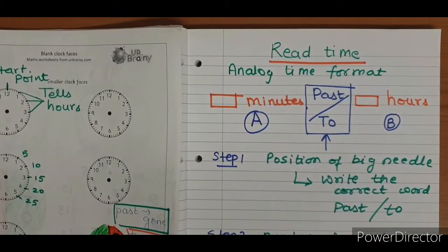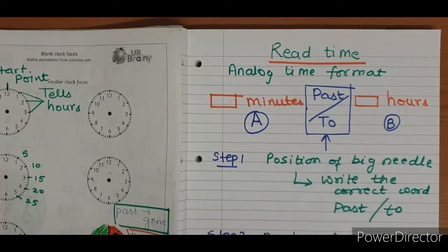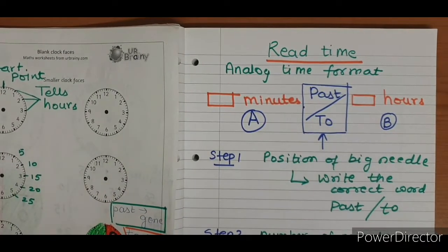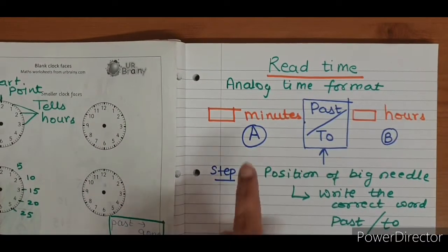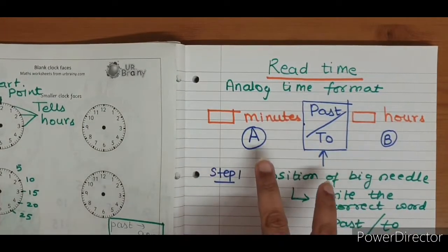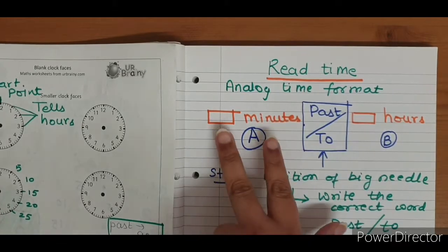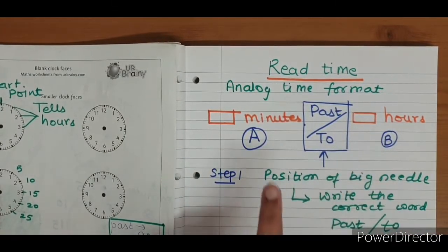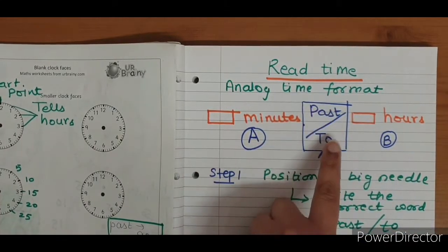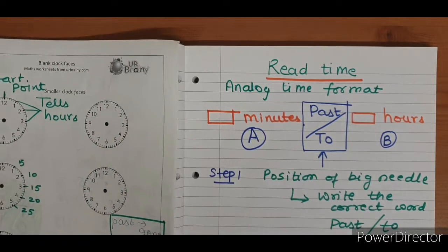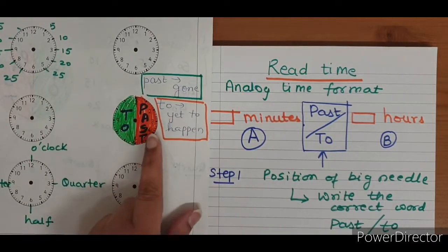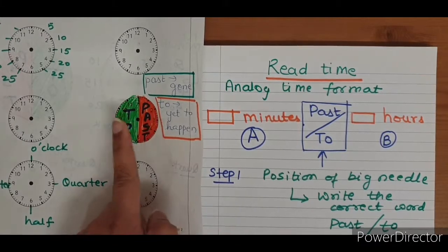Hi, Analog Clock Part 2. In this video, we will learn about how to read a given time on the clock face and how to write time in analog format. Analog time is usually written in this format. We have two parts: Part A, we write minutes; Part B, we write hours. Both of these parts are separated with a word — past or to. Which word we need to select, we have already learned that in the previous video. We will look at the position of the big needle and then decide whether we have to use past or to.